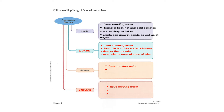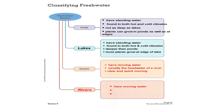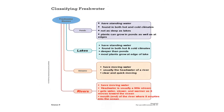The other two types of freshwater biomes are streams and rivers. Streams and rivers have constantly moving water, and gravity is what keeps pulling that water down towards the ocean. On your organizer under streams, you could list: has moving water. Usually a stream is what we call the headwater of a river, and it has clear and quick moving water. Rivers have moving water. The headwater is usually a little stream. Rivers get wider, the water starts moving slower, and the water gets warmer as it moves towards the ocean. When it empties into the ocean, the end of that river is called a mouth.